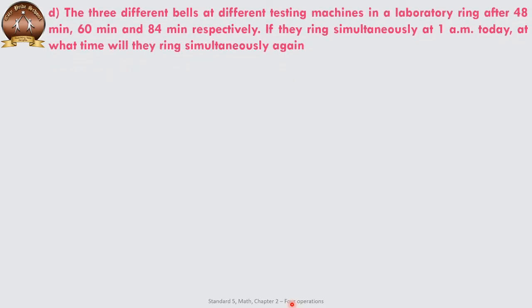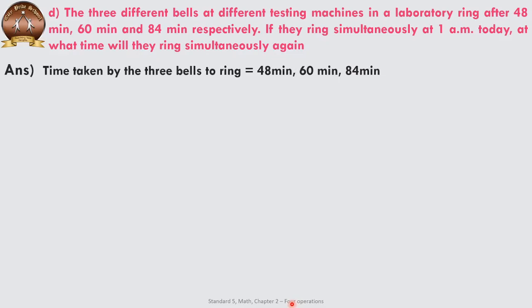Three different bells at different testing machines in a laboratory ring after 48 minutes, 60 minutes, and 84 minutes respectively. If they ring simultaneously at 1 AM together, at what time will they ring simultaneously again? The three bells ring after 48, 60, and 84 minutes, and they all rang together at 1 AM.